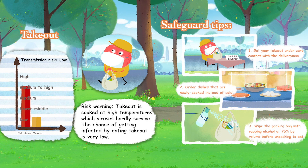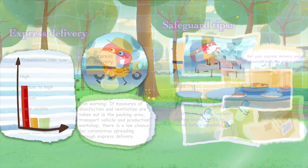Takeout — Risk Warning: Takeout is cooked at high temperatures which viruses can hardly survive, so the chance of getting infected by eating takeout is very low. Safeguard tips: (1) get your takeout with zero contact with the delivery person, (2) order dishes that are newly cooked rather than cold, and (3) wipe the packing bag with 75% rubbing alcohol before unpacking to eat.